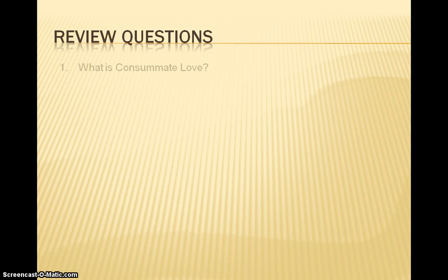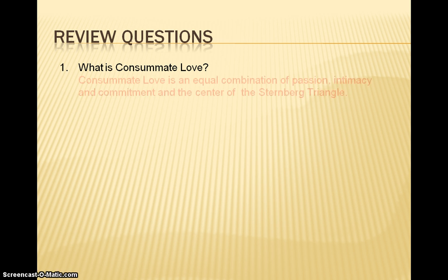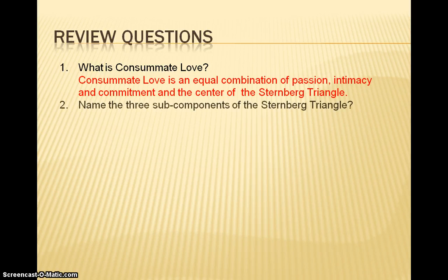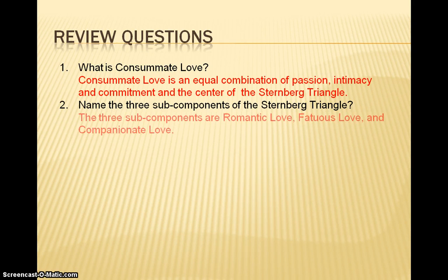Here are some review questions over the topics covered in this slideshow. What is consummate love? Consummate love is an equal combination of passion, intimacy, and commitment, as well as the center of the Sternberg Triangle. Name the three subcomponents of the Sternberg Triangle. The three subcomponents are romantic love, fatuous love, and companionate love.